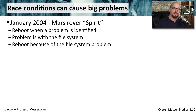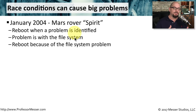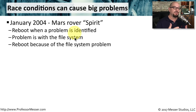These race conditions can cause significant problems. In January 2004, on the planet Mars, we launched a rover called Spirit, and it was simply rebooting over and over again once it arrived on Mars. There was a problem with the file system, and the rover was set up to automatically reboot if there were any problems. Since the problem was with the file system accessed during the reboot process, we had a reboot loop. Ultimately, the controllers back here on Earth were able to put the rover into a safe mode that bypassed the file system so they could boot into a minimal configuration and correct the problems.